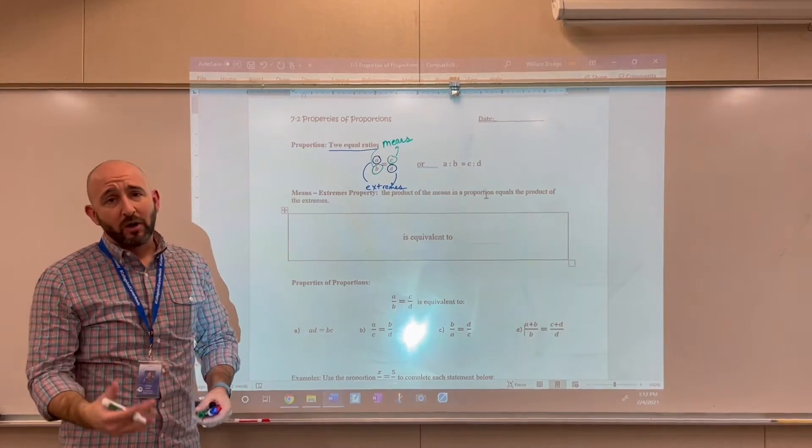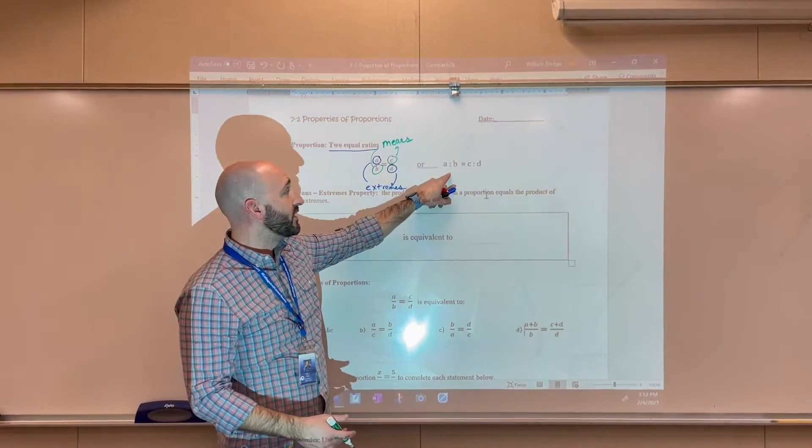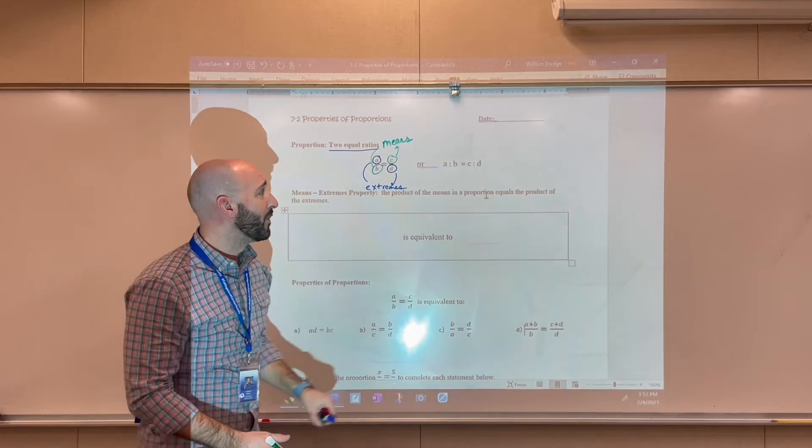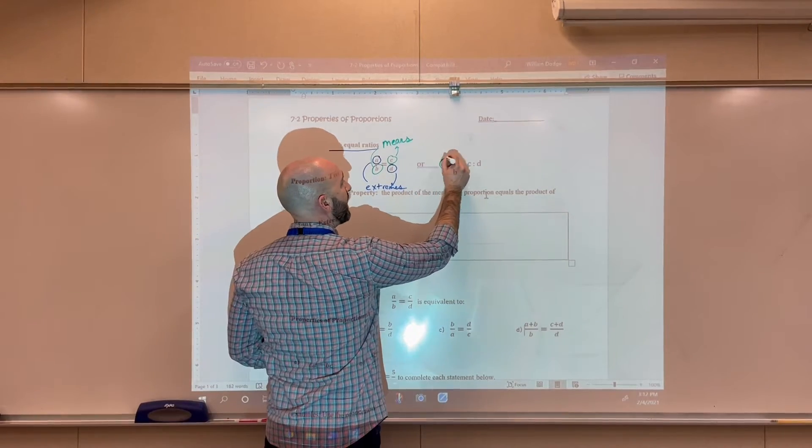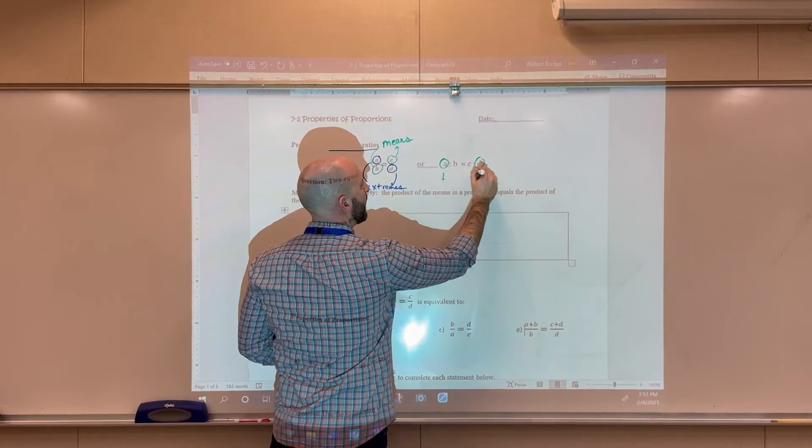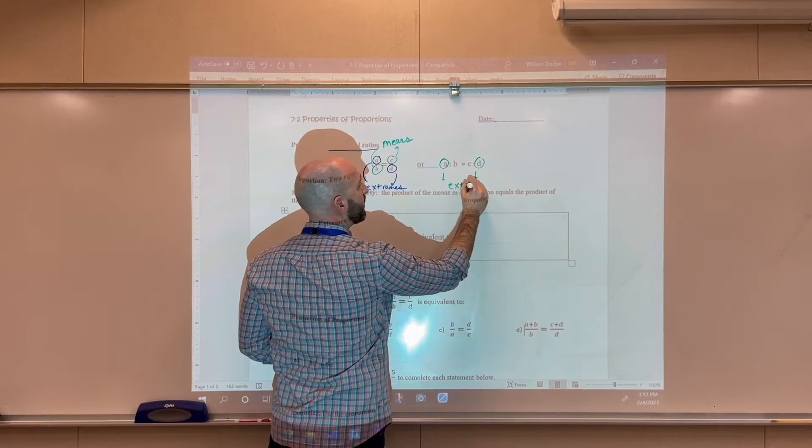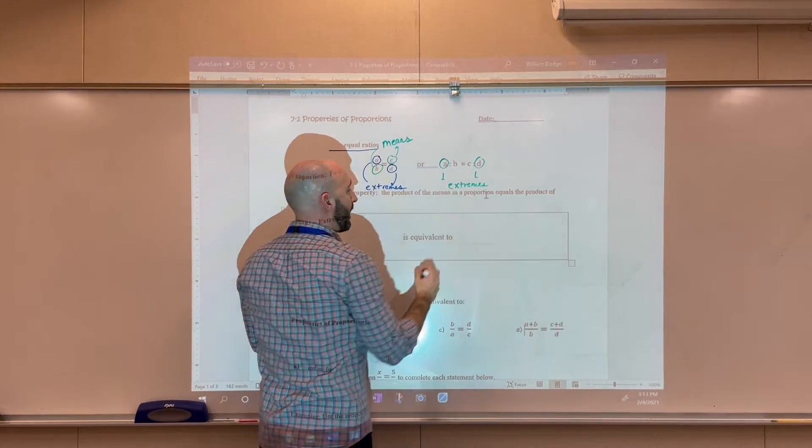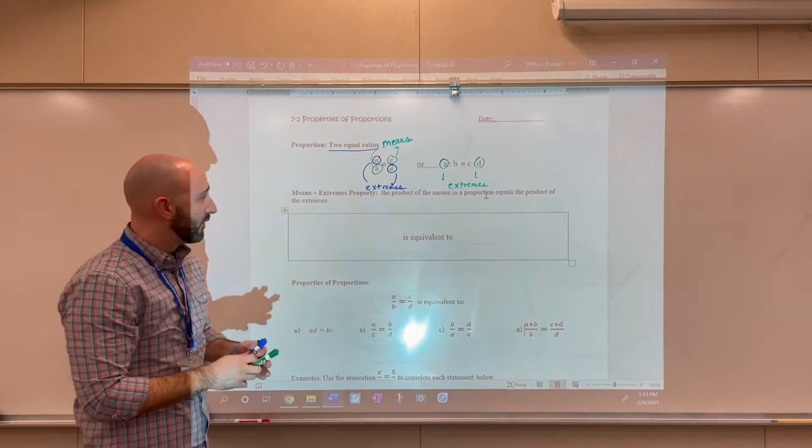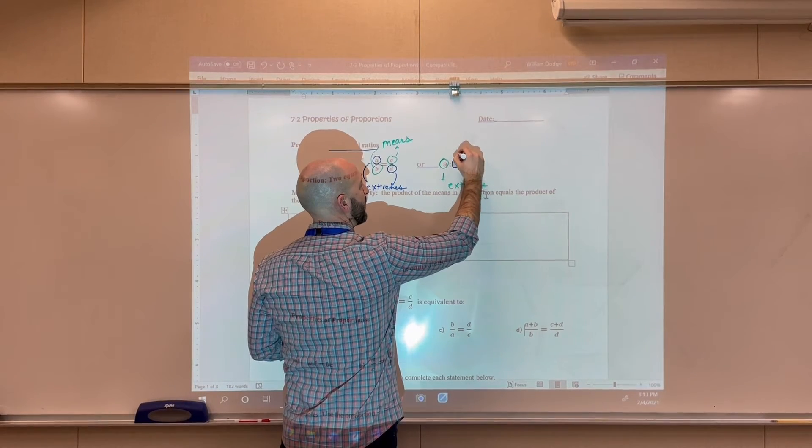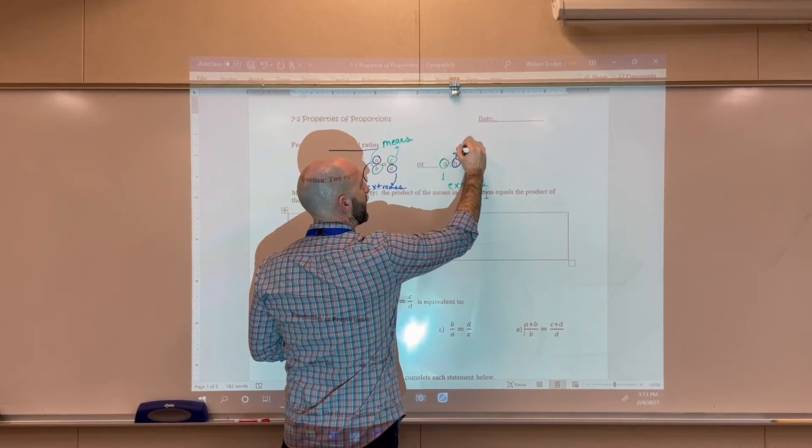And I think it's a little bit easier to see why those would be called the extremes and the means when we see the proportion written in this format. So here's A and D, those again are the extremes. And then B and C are kind of stuck in the middle there. Those would be called the means.